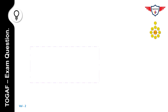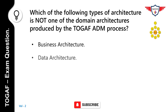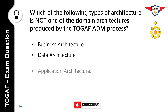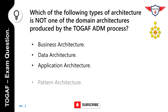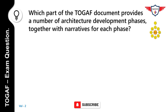Which of the following types of architecture is not one of the domain architectures produced by the TOGAF ADM process? The options are: Business Architecture, Data Architecture, Application Architecture, or Pattern Architecture. The correct answer is Pattern Architecture. Pattern Architecture is not one of the four domain architectures. The four domains are Business, Data, Application, and Technology Architecture.